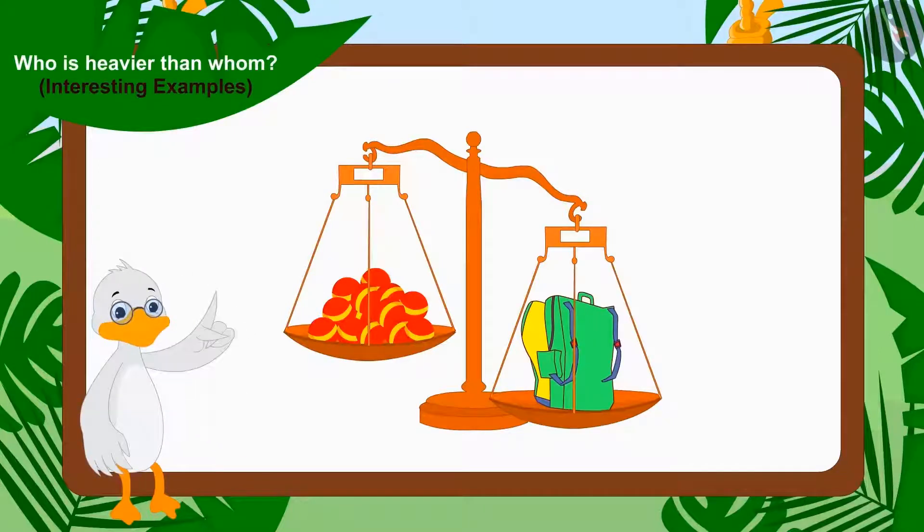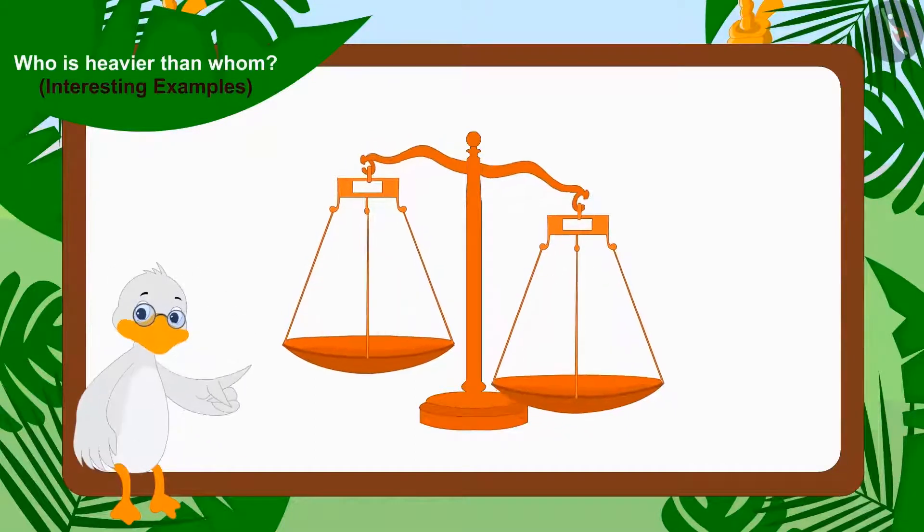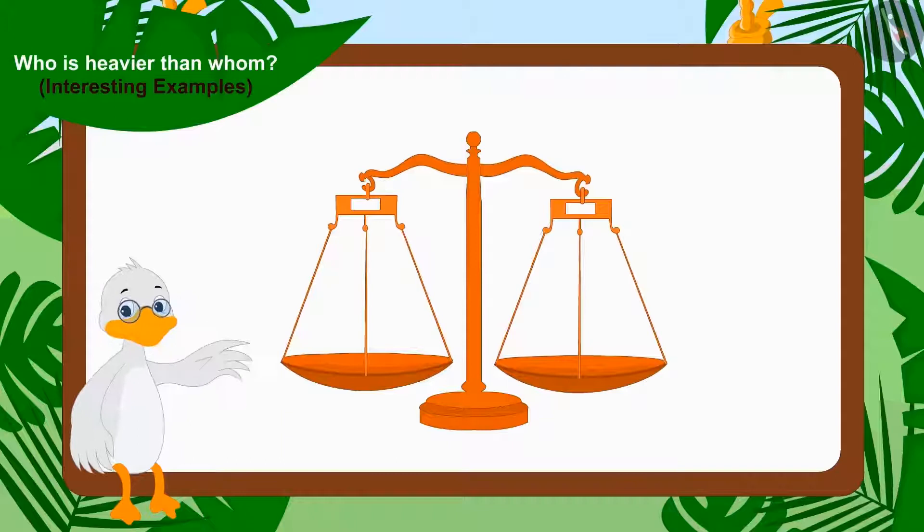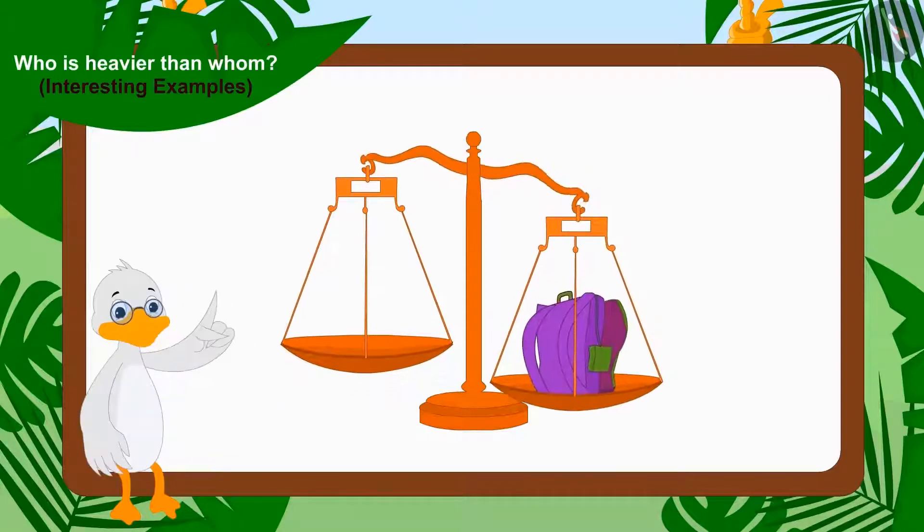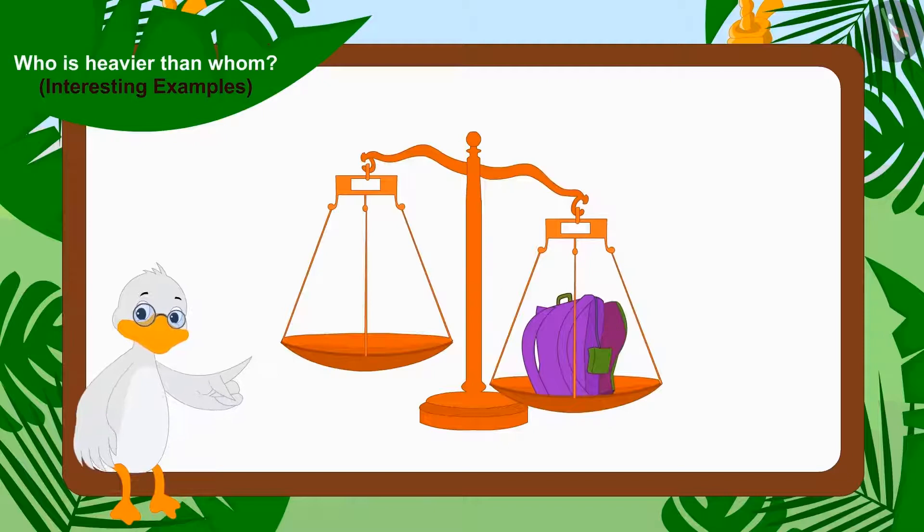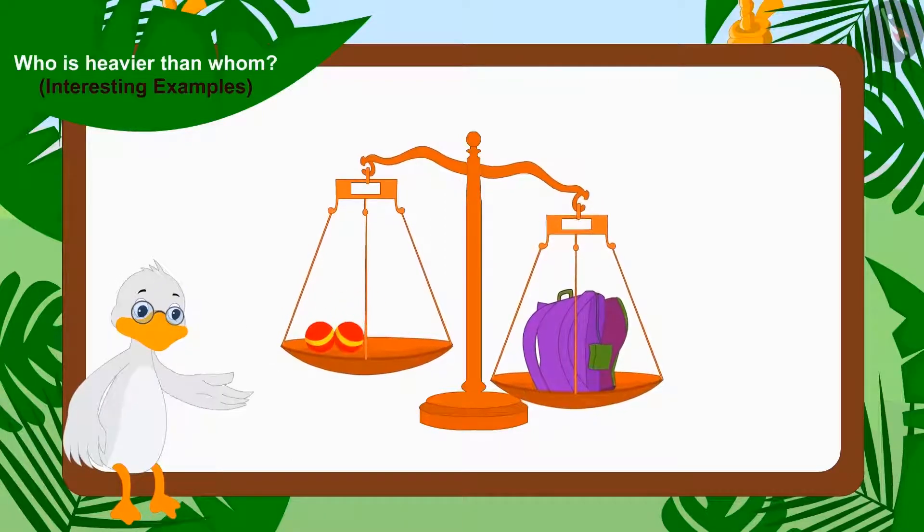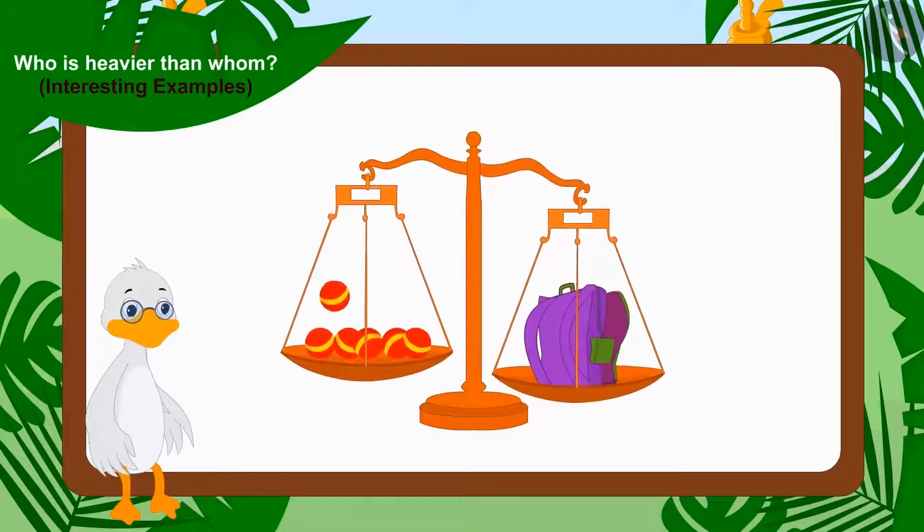Now, Uncle took Sher Khan's bag from the scales and also removed the balls. Now, on one side of the scales, Uncle kept Bhola's bag and on the other side started placing the balls one by one.